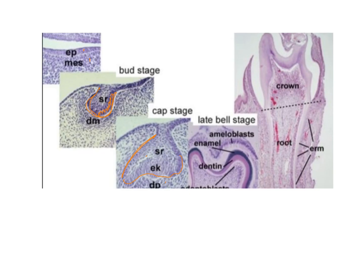The inner enamel epithelium divides to give rise to the ameloblasts, and the ameloblasts lay down the enamel. However, before the ameloblasts lay down the enamel, they induce the cells of the dental papilla to differentiate into odontoblasts. These odontoblasts lay down the dentine, and because of this the inner enamel epithelium differentiates into ameloblasts. That is the reason why the first tooth structure to be formed is the dentine and not the enamel. What we see here is the enamel knot, which is basically a reservoir of dividing cells.